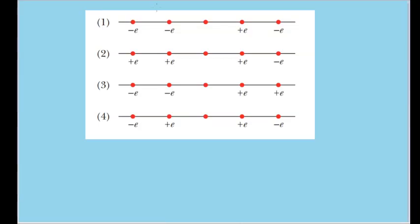In this question, we're shown four situations with five evenly spaced particles. The center particle has the same charge in every situation, but the other four charges are different for each situation, all having either a positive or negative charge of E, the elementary charge. We are asked to rank the situations according to the magnitude of the net electrostatic force acting on that middle particle.